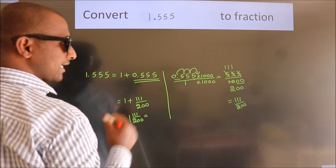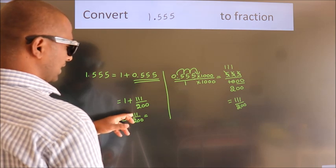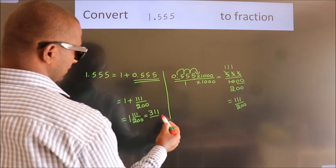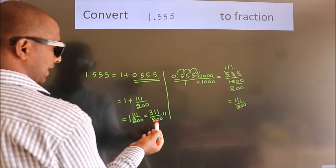And in improper fraction it is 1 into 200, 200 plus 111. We get 311 by 200 is our fraction.